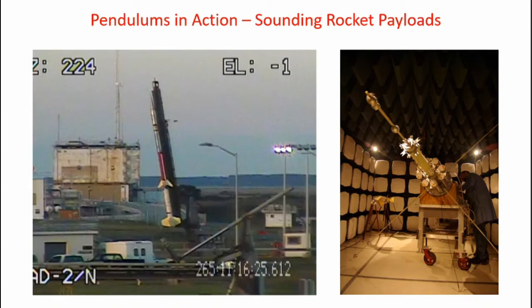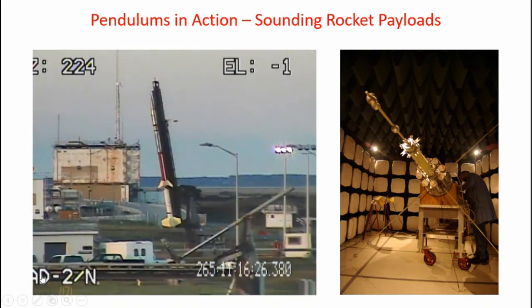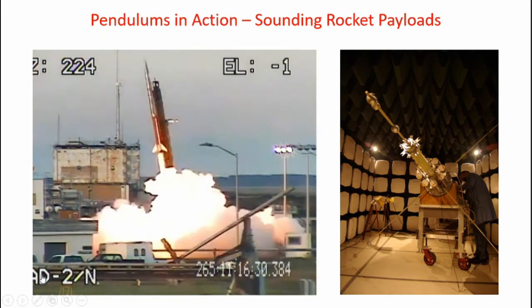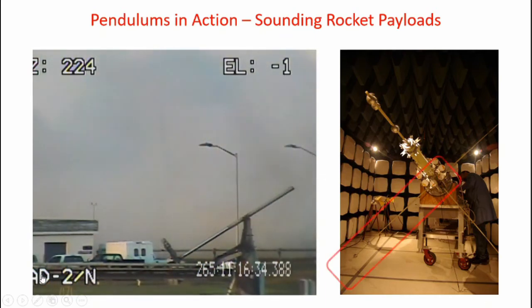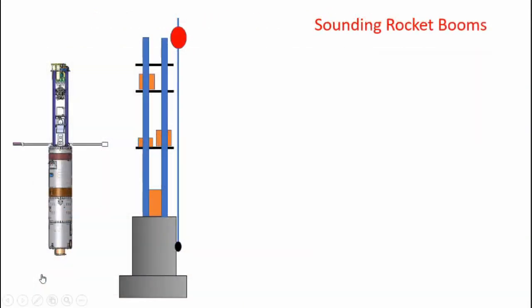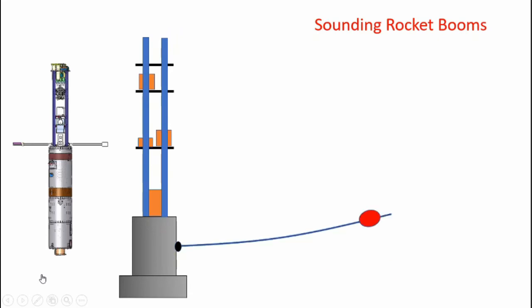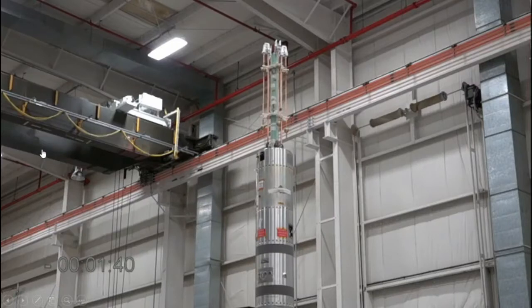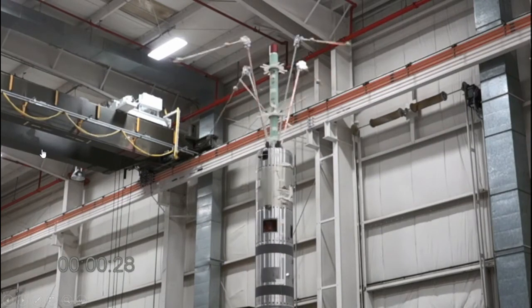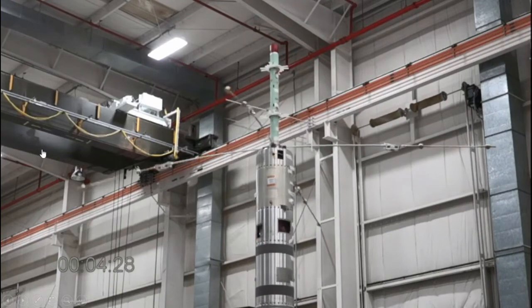Pendulums don't always involve bobs and strings. Anything narrow, long, and somewhat flexible can act like a pendulum. In sounding rockets, payloads sometimes use flexible booms containing sensors to make scientific measurements in space. These booms, when deployed, can overshoot their stop position and oscillate back and forth much like a simple pendulum. Here's footage of an actual sounding rocket payload undergoing a boom deployment test — you can see the booms flop down, deploy, hit the stops, and go into periodic oscillation.